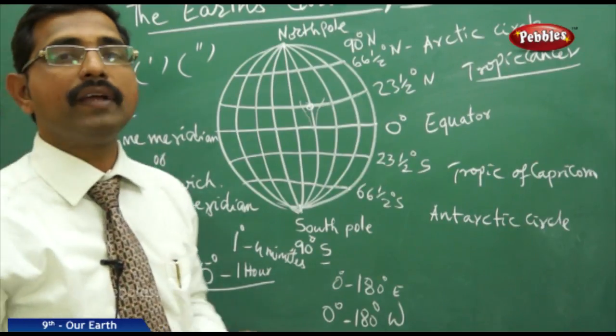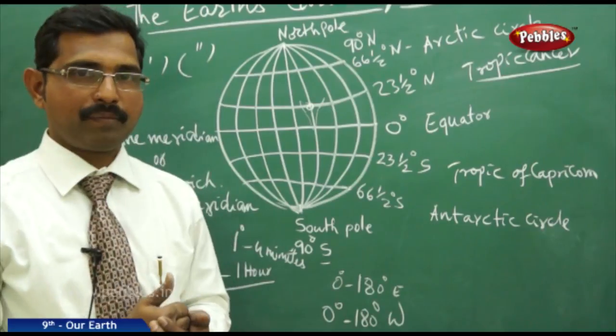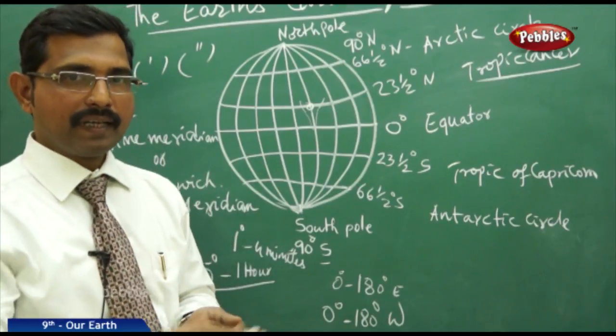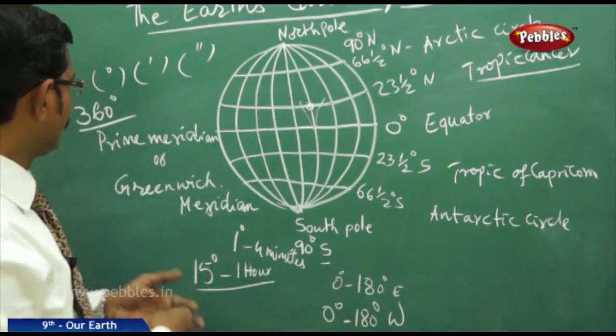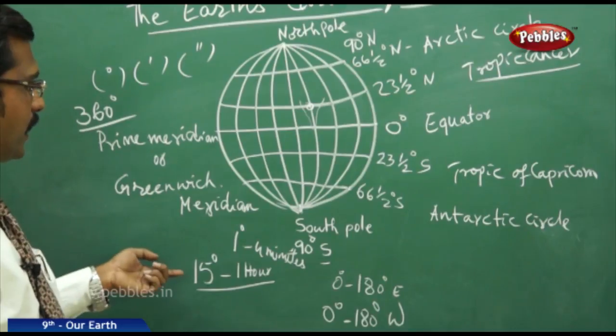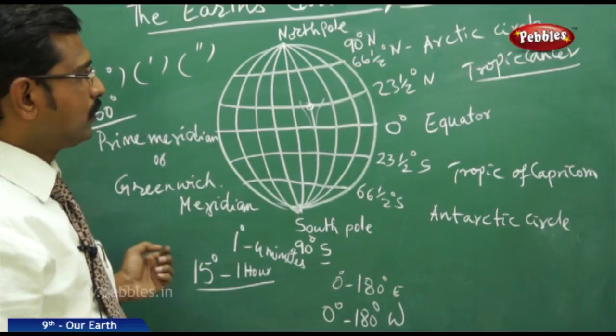For every one degree difference between meridians, there is a four-minute time difference. If you move one degree east or west, the time changes by four minutes. For every 15 degrees, there is a one-hour difference. Since there are 360 total longitudes and 24 hours in a day, 360 divided by 24 equals 15 degrees per hour.